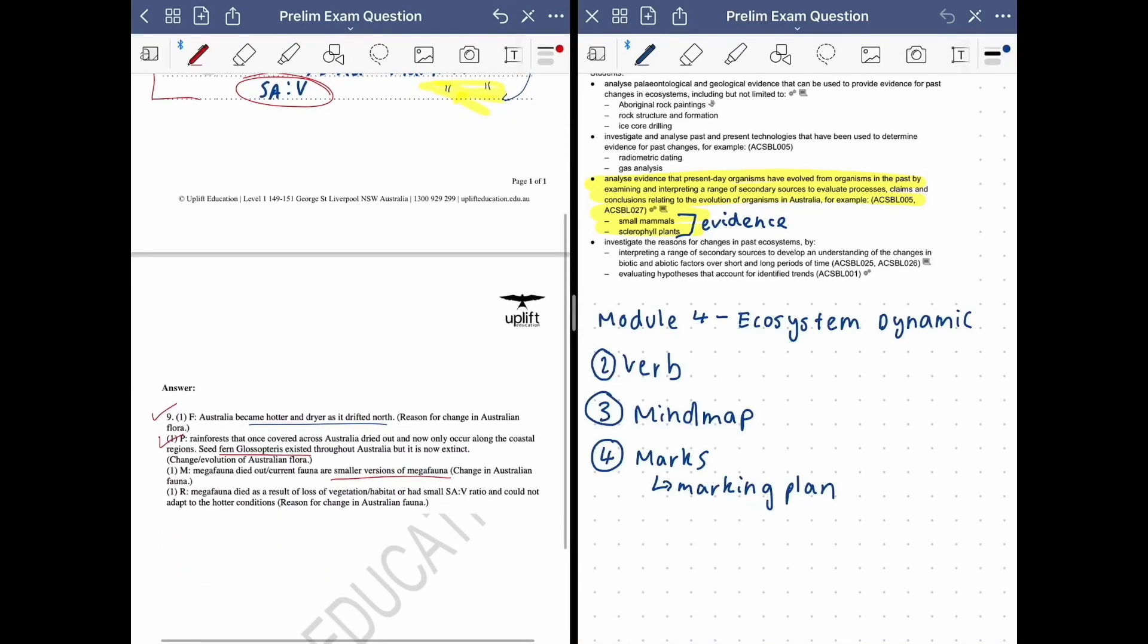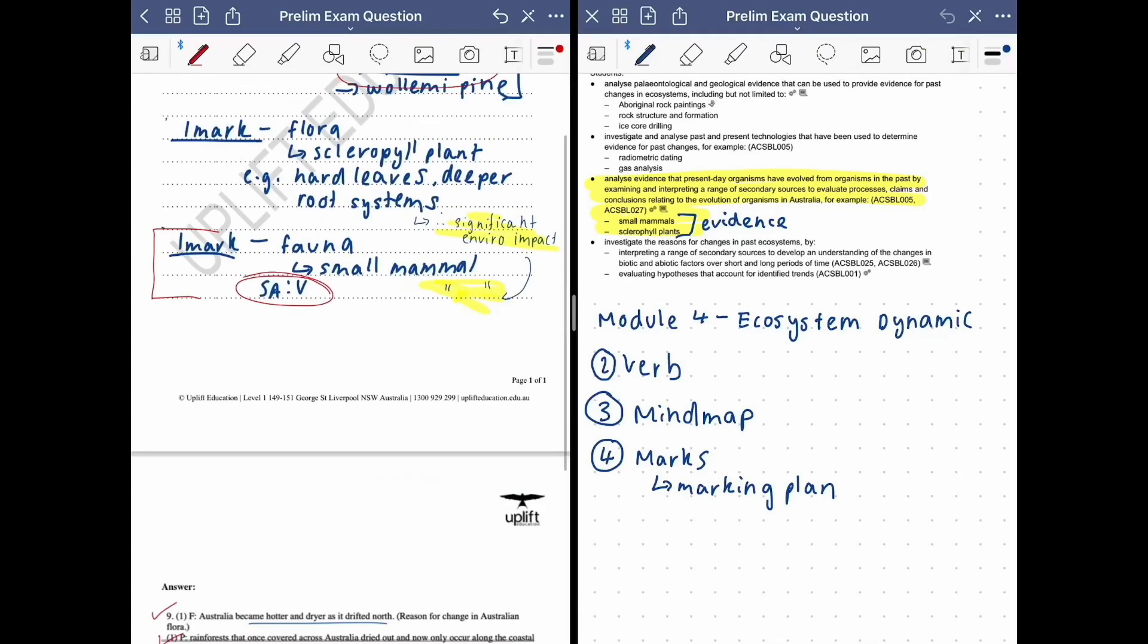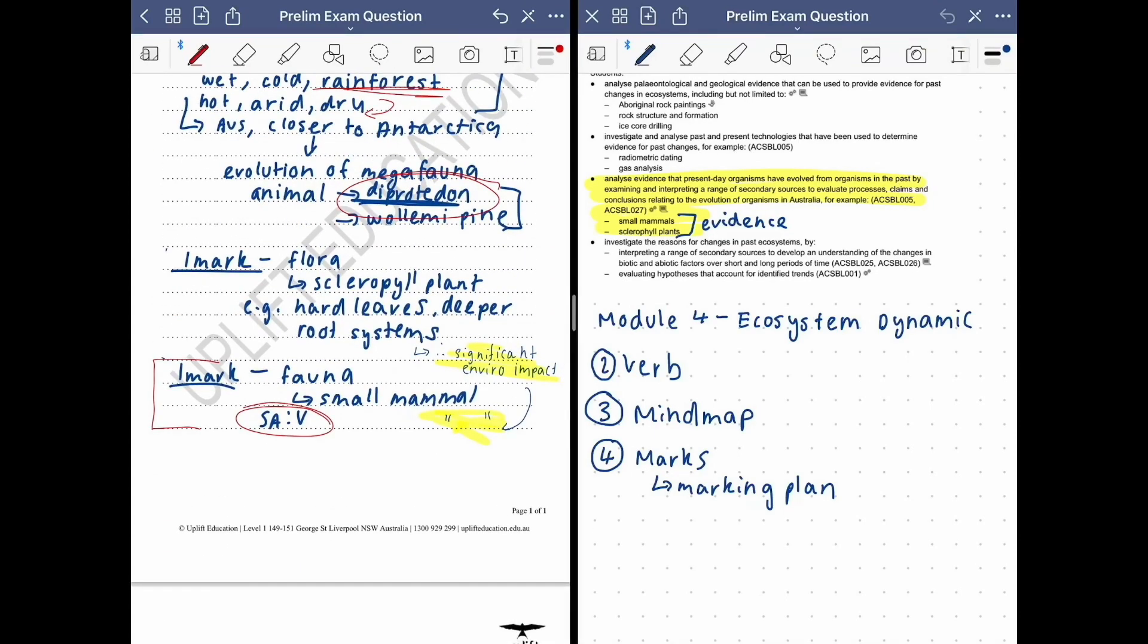And then over here they've said megafauna died as a loss of vegetation habitat or had small surface area to volume ratio to adapt to the hotter conditions. So we've given evidence for adaptations over here and here so we've covered that.